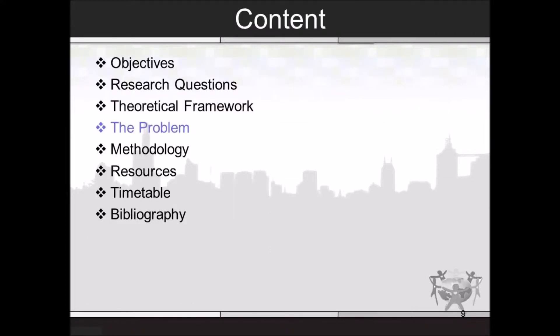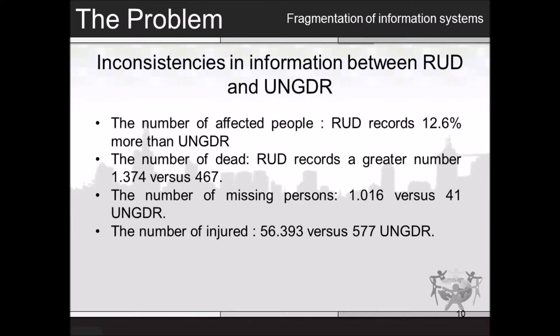The problem is subdivided into three problems: fragmentation of information systems, the number of affected people being greater than the total population, and wrong validation of information. Here you can see an example of the first problem, where the only record of victims has a greater number of affected people, dead, missing persons, and injured than the National Unit for Disaster Management, because they do not share information. For my project, I will use the only record of victims database because it is the official record the government uses for financial aid.